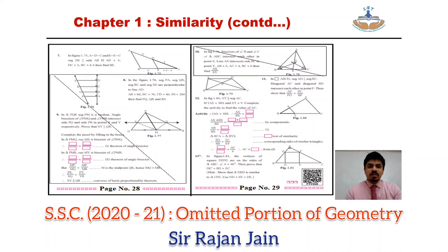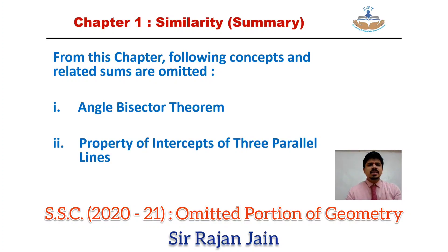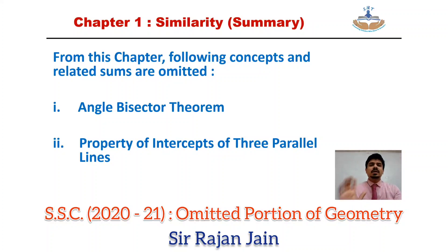On page number 28, you can strike out question number 8 and question number 9, and on page number 29 you can strike out question number 10. These are the omitted portions in chapter number 1 — similarity. To summarize: from this chapter, the angle bisector theorem and all sums based on it are omitted, and you don't have the property of intercepts of 3 parallel lines and its corresponding sums.